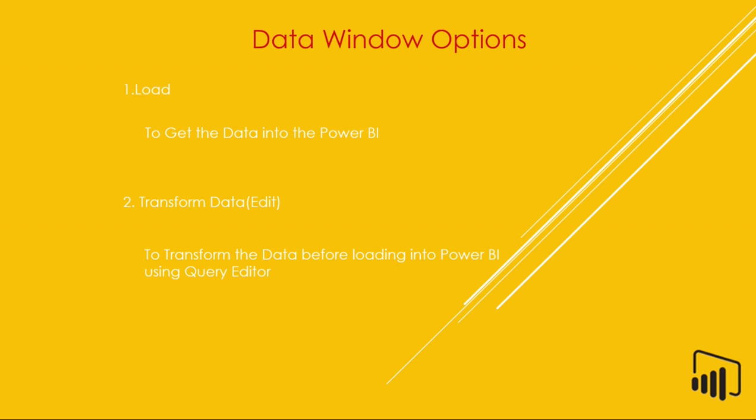When we need to perform any transformation, then we need to choose Transform Data. Why do we need to do transformation? When the data is not clean, not optimized, not structured or formatted, when the data is not shaped — then we need to perform some transformation to clean up the data. This cleaning process will be done in the Power Query Editor, to transform the data before loading into Power BI.